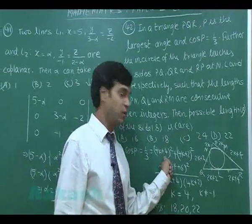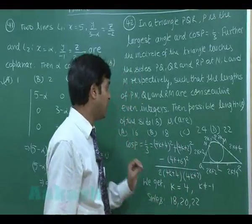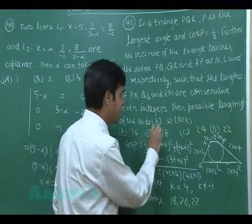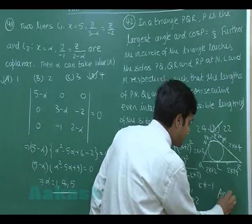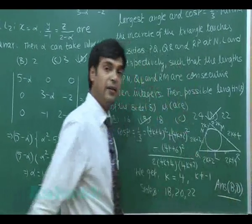From the given options, we clearly see 18 is there and 22 is there. So correct answers are B and D. Now turn to move to the next question, that is question number 43.